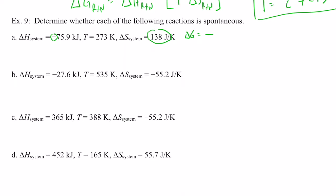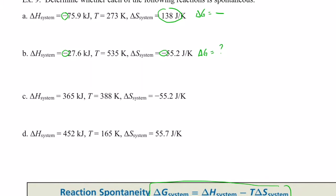Let's take a look at the next one. Delta H is negative — nature likes that. Delta S is also negative — nature does not like to go to a lower degree of disorder. So delta G in this situation we're going to have to calculate to find out if it's positive or negative to determine the spontaneity. Let's take a look at letter C. Delta H is positive — nature doesn't like that. Delta S is negative — nature doesn't like that either. This reaction is never going to be spontaneous. So we know delta G is going to be positive; we just don't know the magnitude until we plug it into our equation.